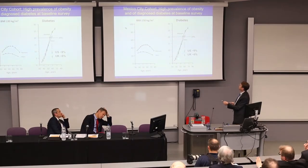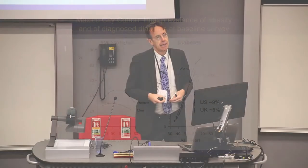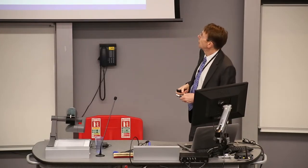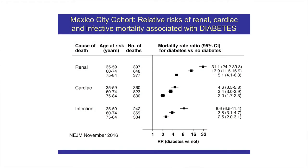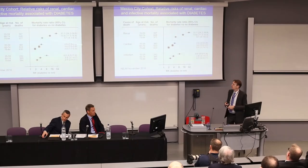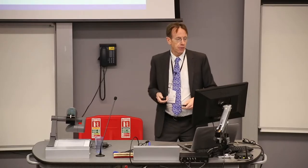The rates of diabetes in Mexico are massively higher compared with the US. When one looks at the impact on mortality, there's something like a 30-fold increase in the risk of death from renal causes under the age of 60 due to diabetes secondary to obesity, and twice the relative risk for cardiac diseases compared with what one typically sees in developed populations.